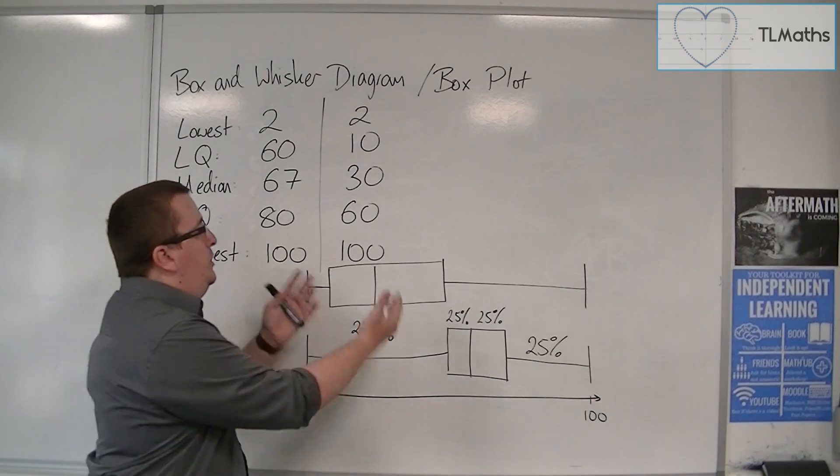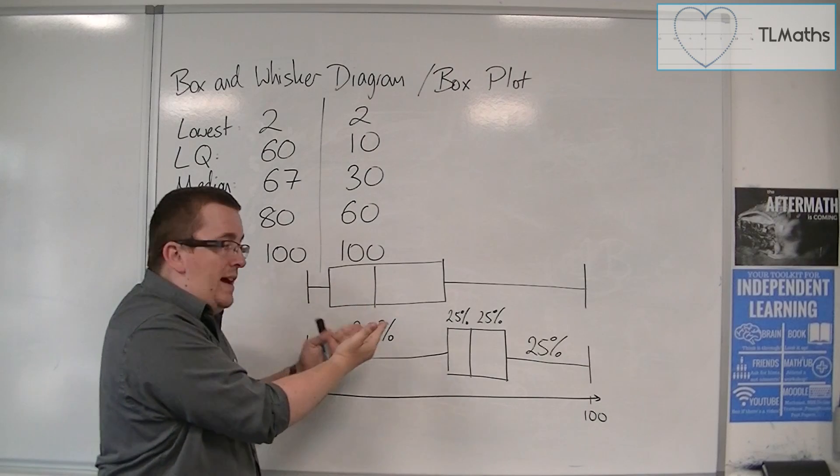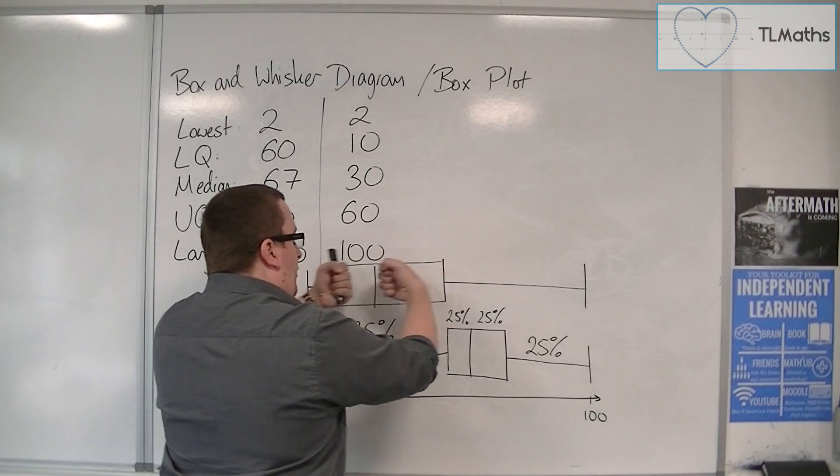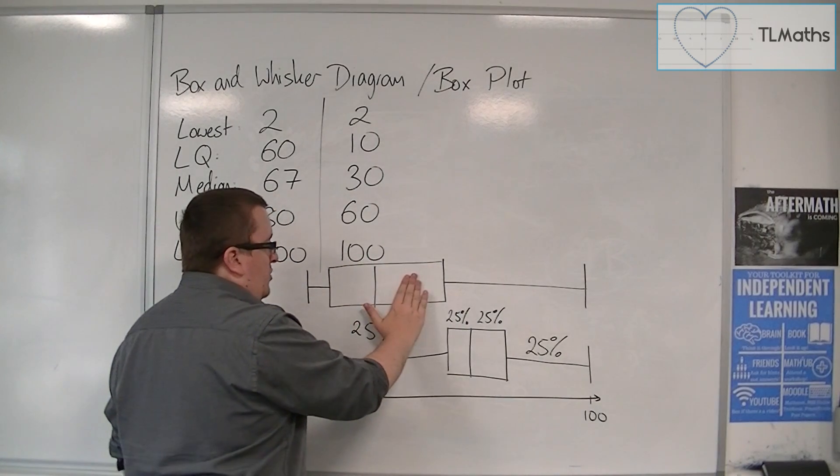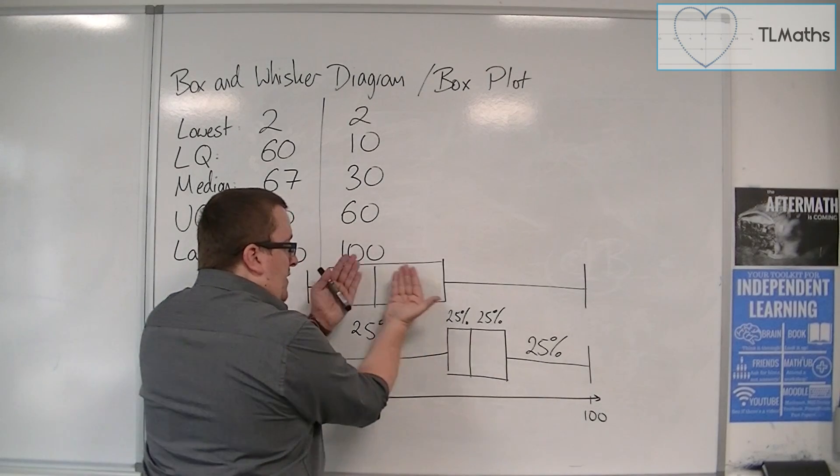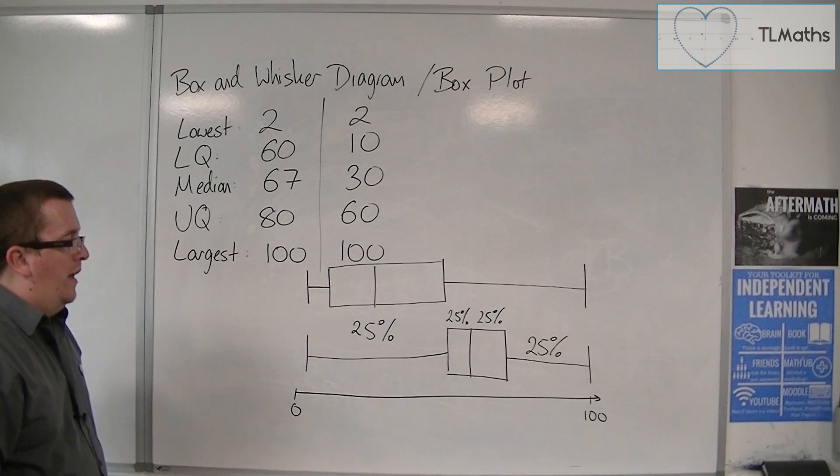And also, you can see that this data is more spread out in the sense that it has a larger middle 50%. Remember that's 25, that's 25, as was that 25 and 25 there. So you can see that this box is larger, and so the data is more spread out as well.